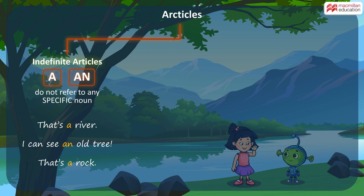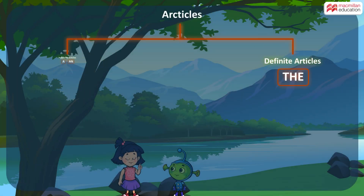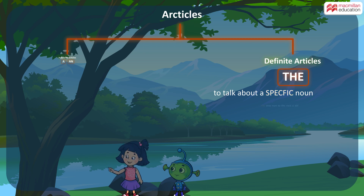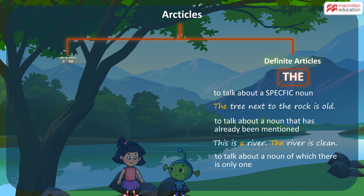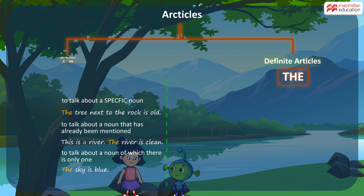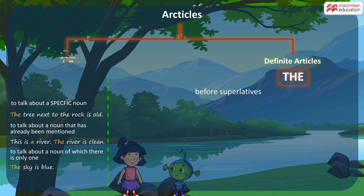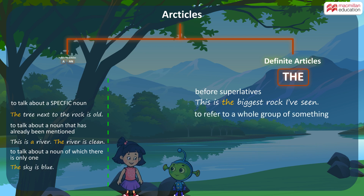So I can say that's a rock. Now, THE is a definite article. This means we use THE when we want to talk about a specific noun. For example, the tree next to the rock is old. Here I am talking about one specific tree. Similarly, we use THE when we talk about a noun that has already been mentioned — this is a river, the river is clean. We use THE when we talk about a noun of which there is only one. For example, the sky is blue. We use THE before superlatives. For example, this is the biggest rock I have seen. We also use THE to refer to a whole group of something. For example, this river is important to the villagers.